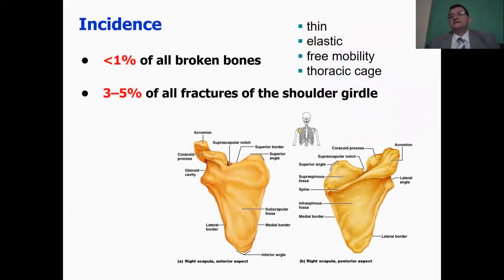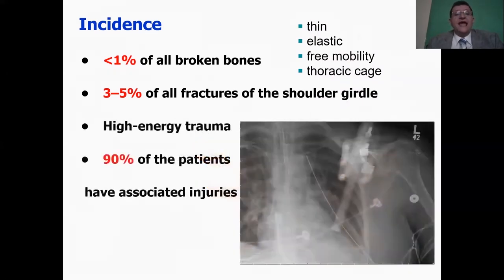It's rarely broken, the scapula. It's less than 1% of all broken bones. It's thin, elastic, freely mobile, covered with a lot of muscles, and it lies on the thoracic cage, which has a lot of malleability. As well, it represents 3% to 5% of all fractures of the shoulder girdle, and it is usually part of a high-energy trauma.